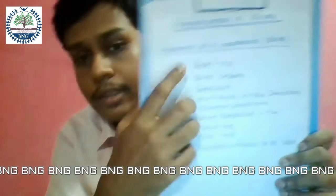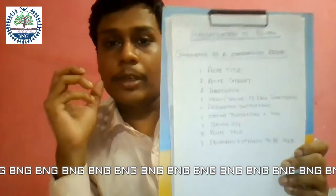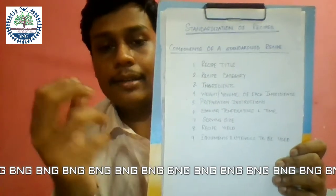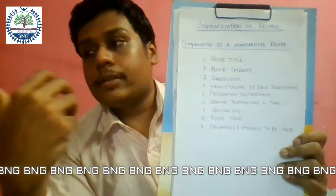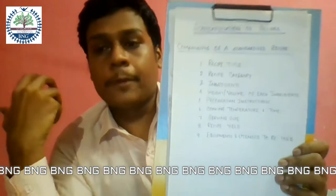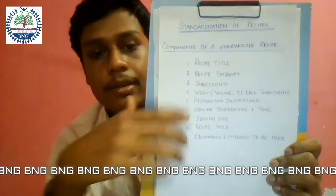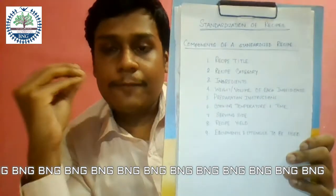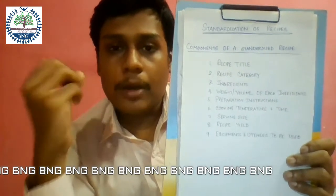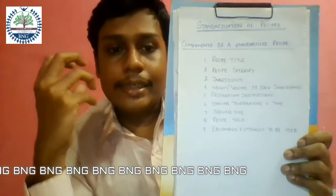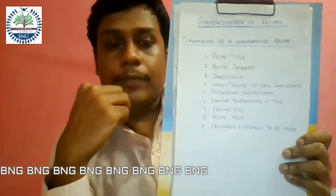Now we need to know what components a standard recipe should have. First is the recipe title — the particular recipe has its own name. Second is the recipe category — what type of dish it is, such as dessert, main food, or snacks. Third are the ingredients — the proper quantity, weight, and name of each ingredient needed to make the dish.